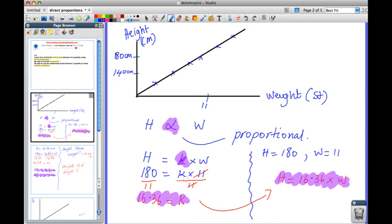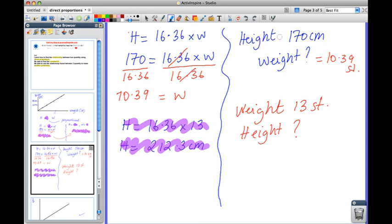Then our next job was to find what K was. And to find K, we need two initial values. So in this case, we used the height was 180 and the weight was 11. We substituted that into our equation and we found what K was. Next, once we knew what our relationship was, we used it to make some prediction knowing one of the other values. So in this case, we knew that the height was 170 and we predicted that the weight would be about 10.39. And we also did the same thing with the heights when we knew the weights, which was 13 stones. And we said the height would be 212, which was a bit off, I think. But that's your example.